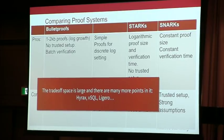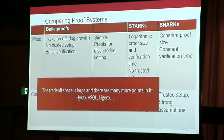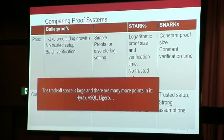There are many more proof systems — Hyrex, VSQL, Ligero — and there are sort of different points in the trade-off space between all these different properties, which in the trade-off space is quite high-dimensional.